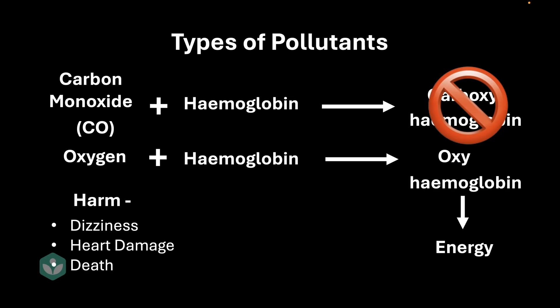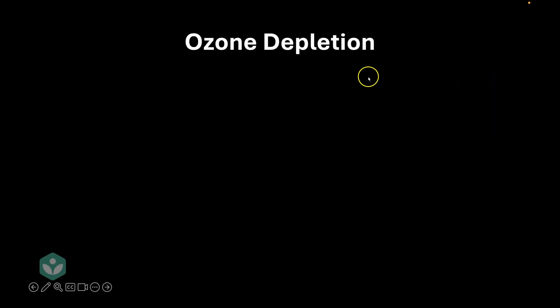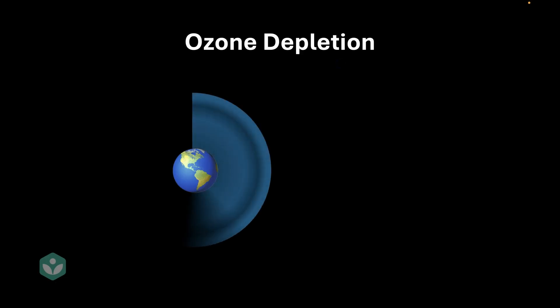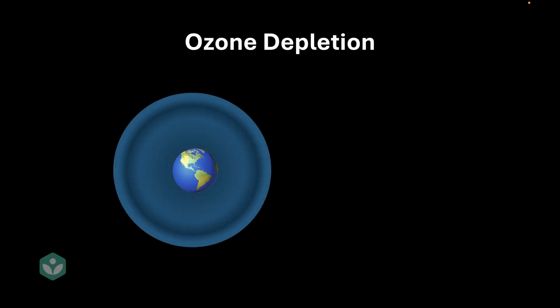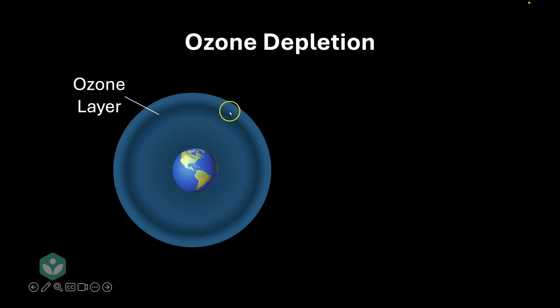Now let's move on to our next type of pollutant: ozone depleting substances. Here's the earth. The earth is surrounded by an atmosphere, and there's a layer in that atmosphere called the ozone layer, which is made up of ozone gas.